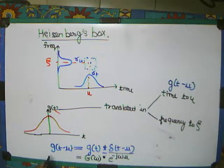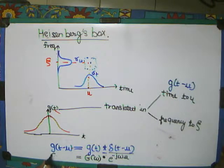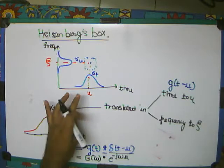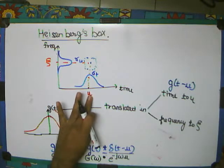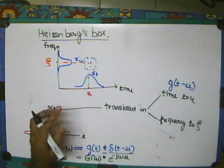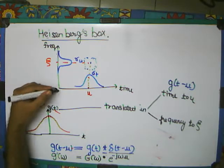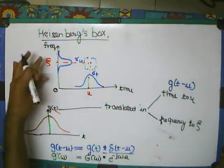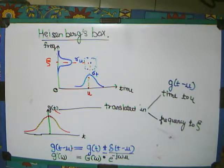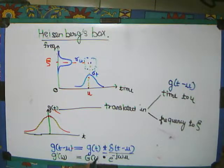But if I take the frequency spectrum of this signal, where will it be centered? It will be centered at U in time, but it will be centered at zero in frequency — it won't be centered at Zeta. So just to make it centered at Zeta, I do a process where I translate it by Zeta in frequency.